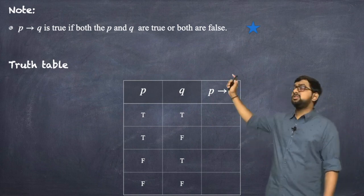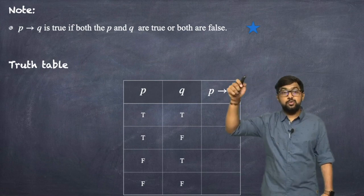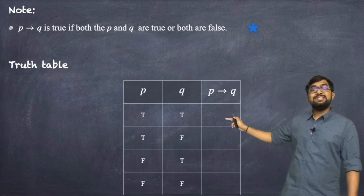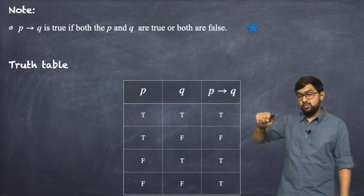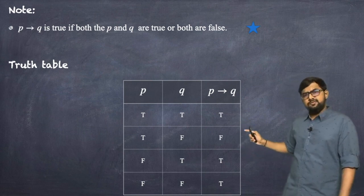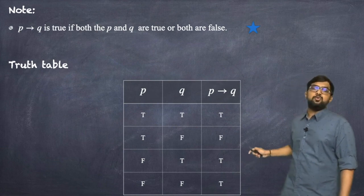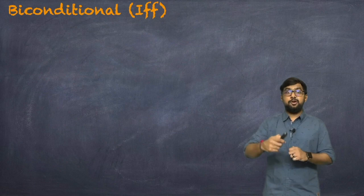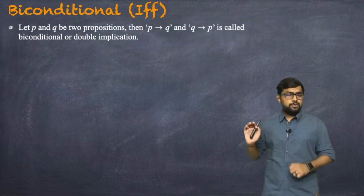For P implies Q: when both P and Q are true, the result is T. When P is T and Q is F, the conclusion is false, so it is F. When P is F and Q is T, it is T. When both are F, it is T. So the column reads T, F, T, T.